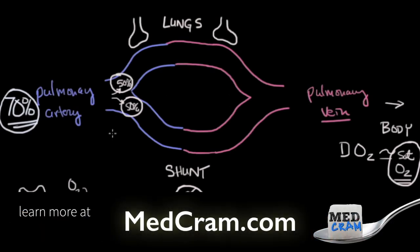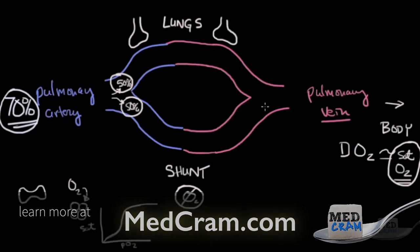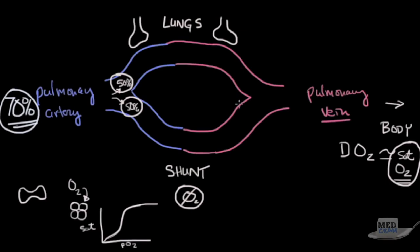But in a shunt situation like we have drawn here where 50% of the blood is diverted away from it, let's go through and figure out the arithmetic about what happens. We've got 70% saturated blood here and 70% oxygen saturated blood here. Because there's lungs here, that area becomes oxygenated, and let's say it becomes oxygenated up to the point that it is now 95% saturated with oxygen.